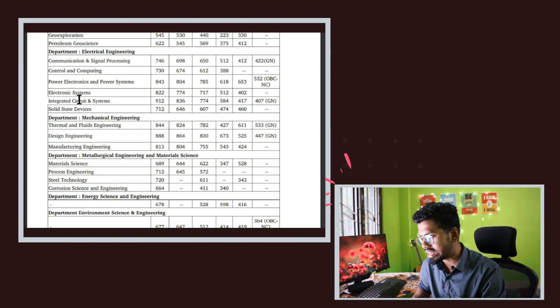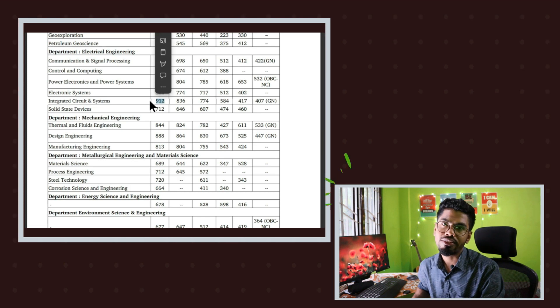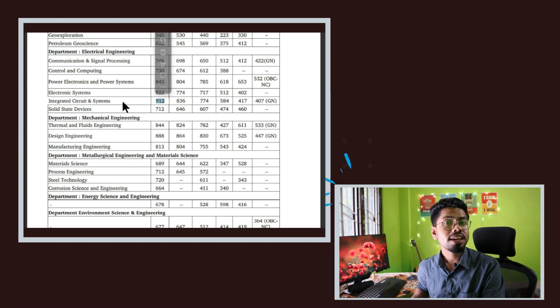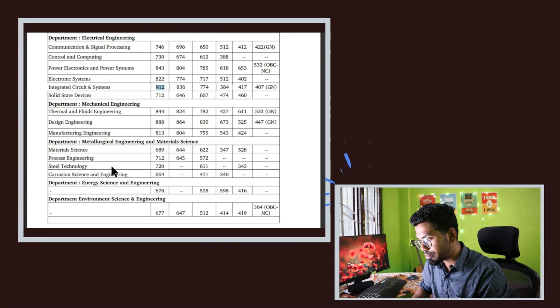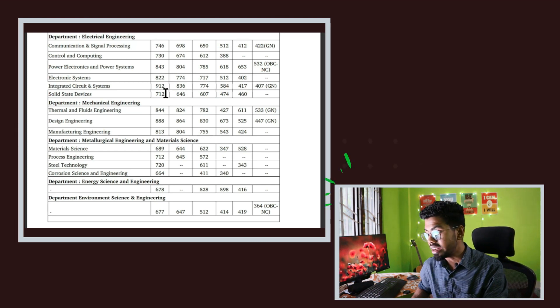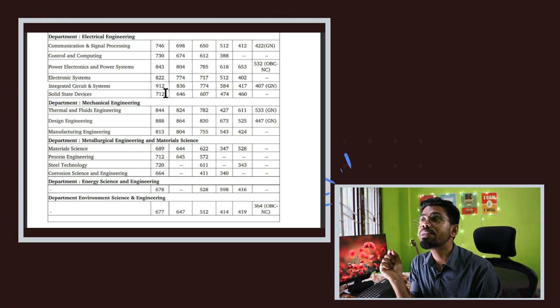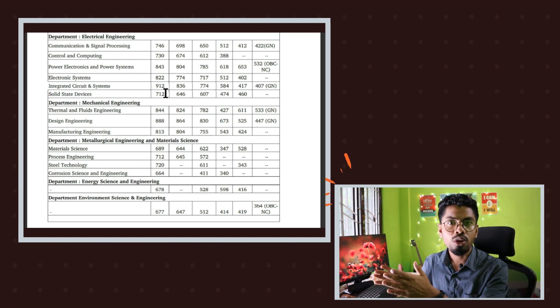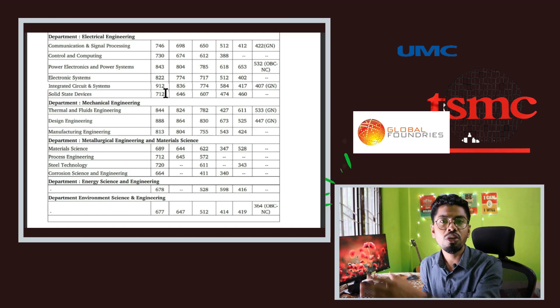For IIT Bombay, the cutoff for Integrated Circuit is 912 — again same as IIT Delhi. But there is the same opportunity in the Solid State Devices branch, where the cutoff is only 712. Solid State Devices is a branch from which, if you want to work in backend or foundry jobs like TSMC or GlobalFoundries, it is like a goldmine — but many people just ignore it and go for core VLSI branch only.